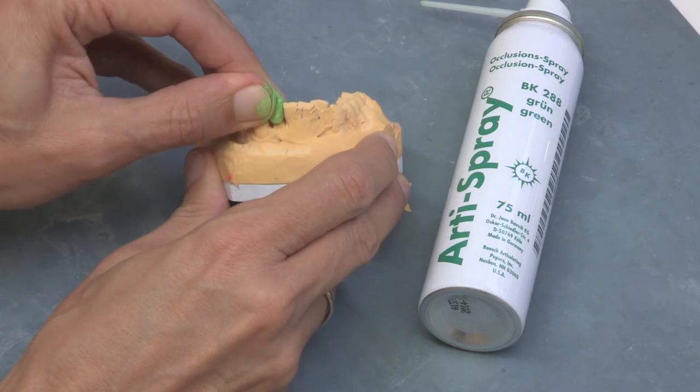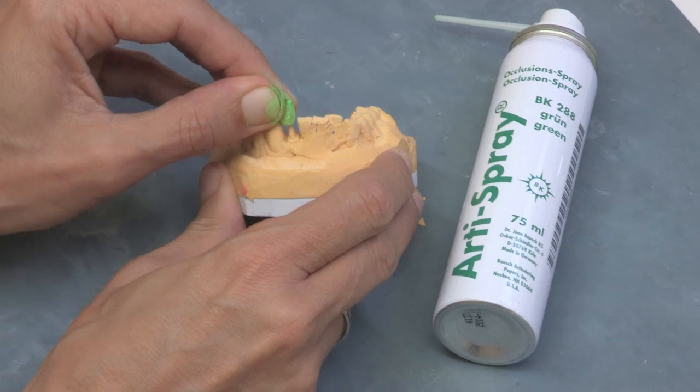Arti Spray can be used for approximal contacts when trial seating crowns and bridges.